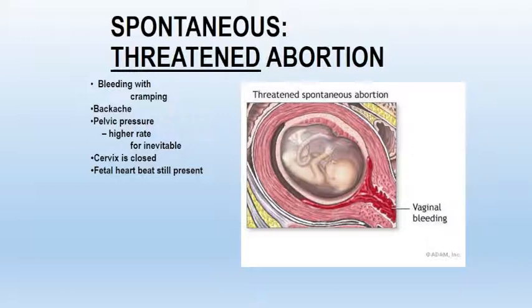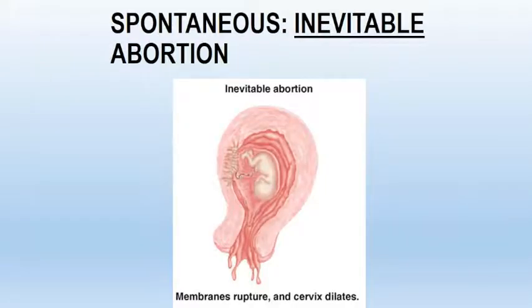When we look at a threatened abortion, the patient is having bleeding with cramping as well as low back pain. If she's feeling pelvic pressure, that increases the risk that she is going to end up with an inevitable abortion. It's important to understand the difference: although they all have bleeding and cramping, with the threatened abortion the cervix is closed and the fetal heart is still present. With an inevitable abortion, we may have a fetal heart present; however, there's nothing we can do to save it because the cervix is open and products of conception are already coming through the cervix.